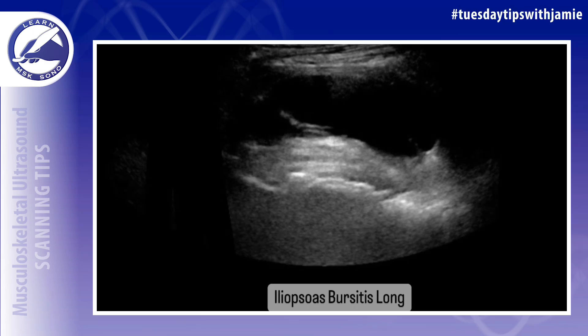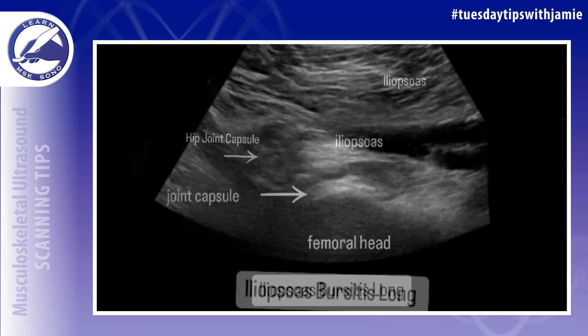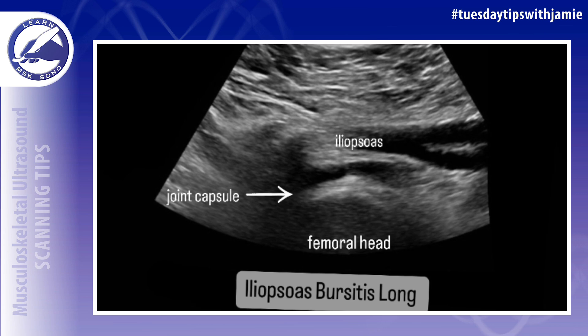Do you know where to locate the iliopsoas bursa of the hip on ultrasound? The iliopsoas bursa lies between the iliopsoas tendon and the anterior capsule of the hip joint. When inflamed, it can be the source of anterior hip pain.